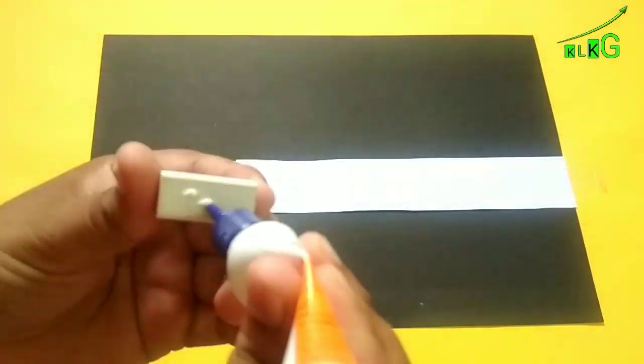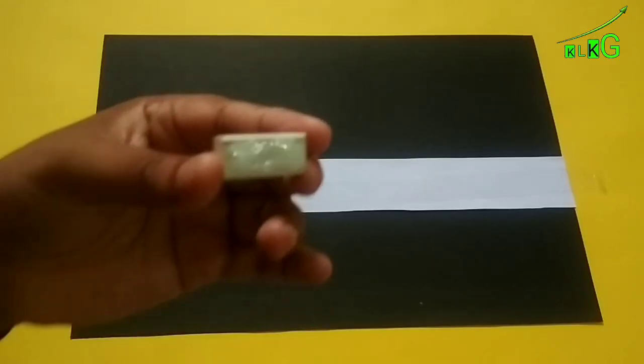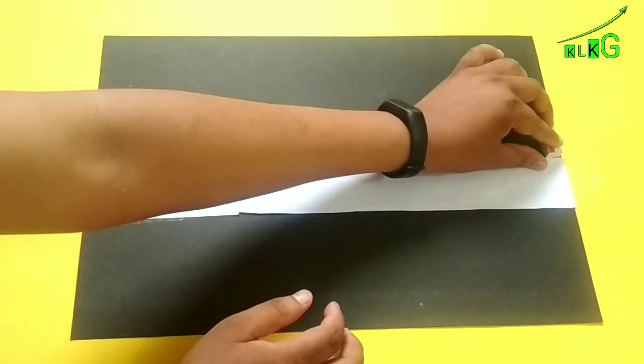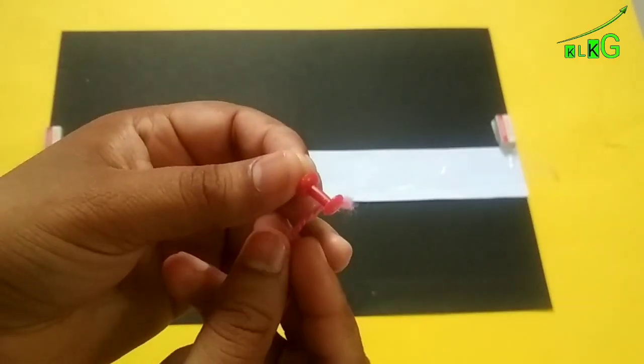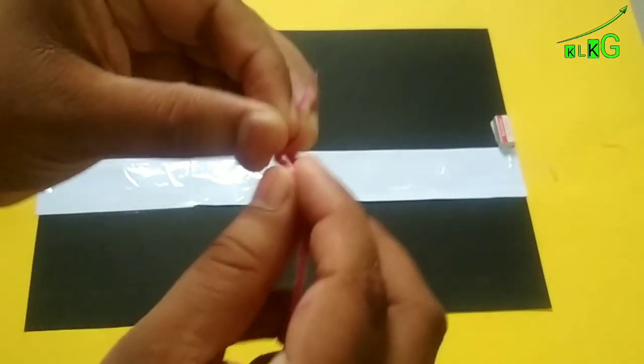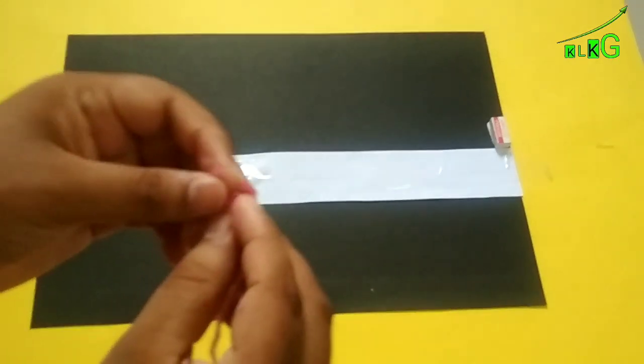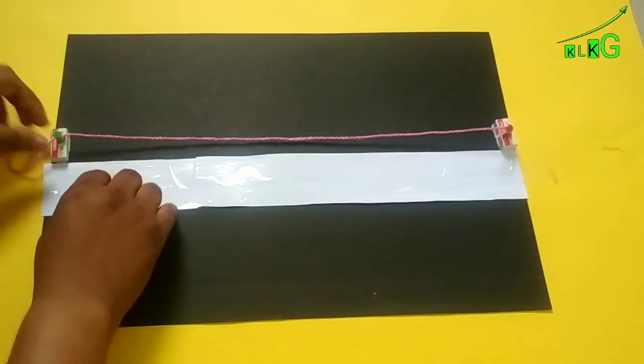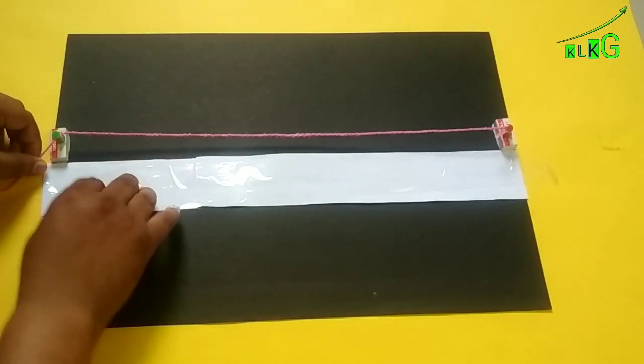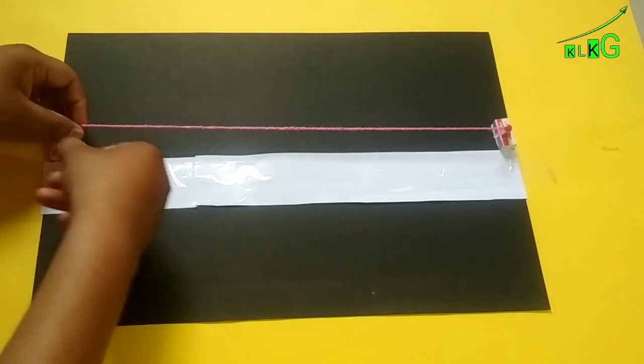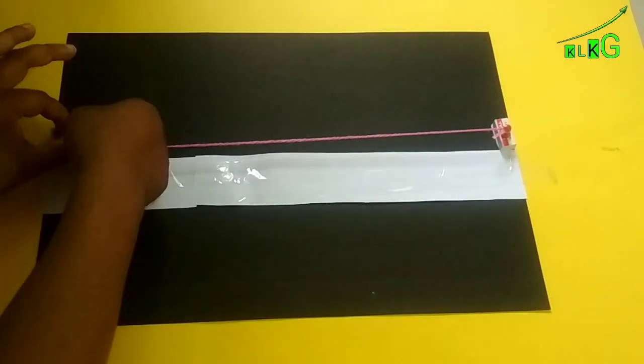Now take a thumb pin and just tie a knot with a thread. You can pin up that thread on the erasers using the thumb pin like this.